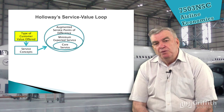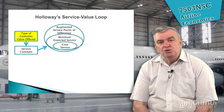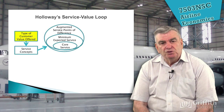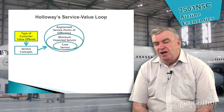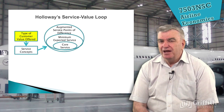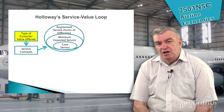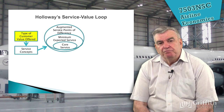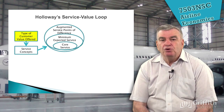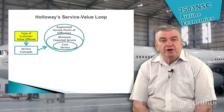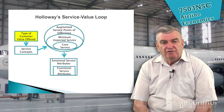We have in our mind a minimum expected service. And then what we also get is what we call augmented service points of difference — airlines try to say, what can we provide that little bit extra that our competitor is not providing for the same price? Such as a free cup of tea or coffee and a biscuit, whereas our competitor says you've got to buy that. Or a free in-flight movie. Those are the sorts of things that can make a difference for people.